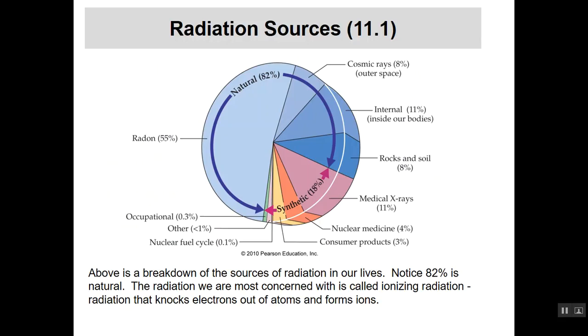The type of radiation we are most concerned with is called ionizing radiation. Ionizing radiation sounds like it makes ions, which is what it does. It knocks electrons out of atoms and forms ions.